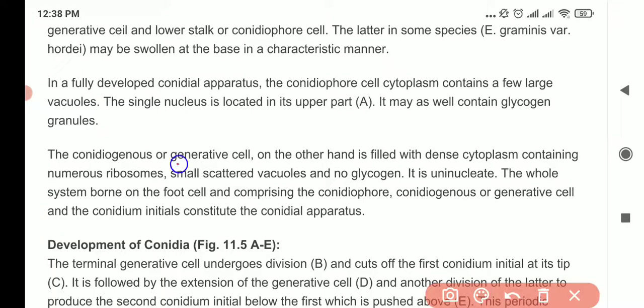These generative cells have dense cytoplasm. Dense cytoplasm means it has a lot of organelles—lots of ribosomes, and there's no glycogen though.